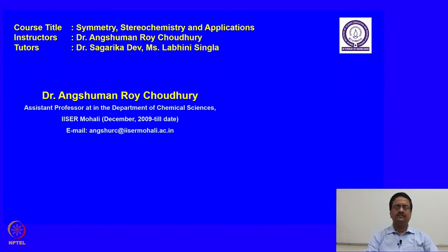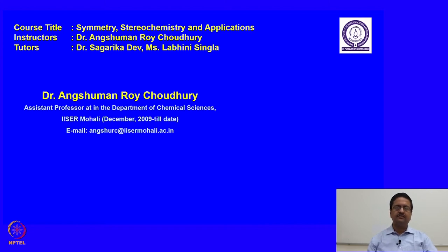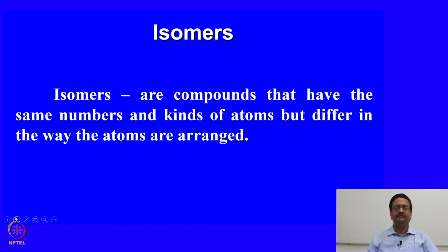Welcome back to the course on symmetry, stereochemistry and applications. In the previous lecture we discussed the various conformational aspects related to cyclohexane and substituted cyclohexane molecules. Now we would like to move to the next part of this course, which is to talk about the aspects of isomerism and how to represent different isomers using projection formulas and their significance.